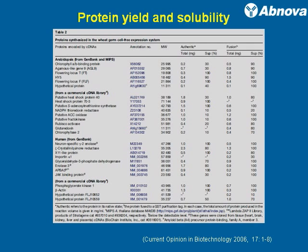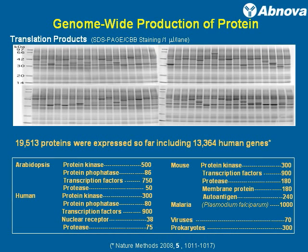This table demonstrates not only the relatively high yield, but also the high solubility, as explained before. So far, close to 20,000 proteins have been expressed in the WeJAM system, including more than 1,300 human genes. This genome-wide production includes model plants like Arabidopsis, human proteins, mouse proteins, and very hard-to-express malaria proteins — currently over 1,200 malaria proteins have been successfully expressed in the WeJAM system — as well as some viruses and even prokaryotes.